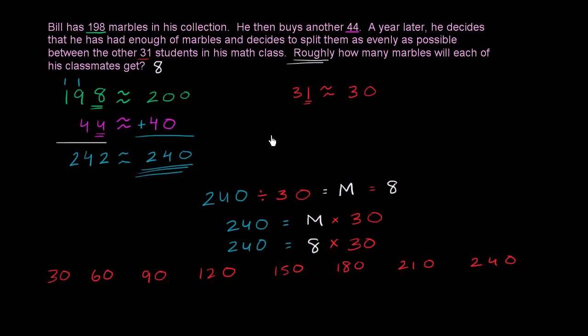Notice, 24 divided by 3 is equal to 8. And if you divide 240 divided by 30, this is also equal to 8. So if you divide something 10 times as large by something 10 times as large, you're still going to get the same value. But either way, each of his classmates are going to get roughly 8 marbles.